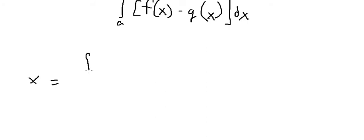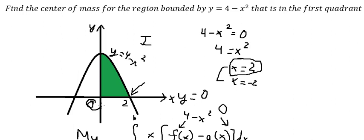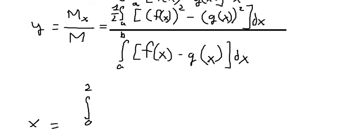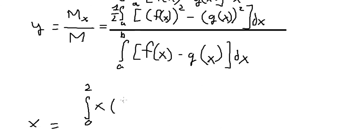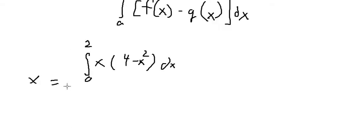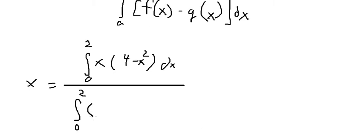For x-bar, the numerator is the integral from 0 to 2 of x times (4 minus x squared) dx. The denominator is the integral from 0 to 2 of (4 minus x squared) dx. Expanding the numerator, x multiplied by 4 minus x squared gives 4x minus x cubed.